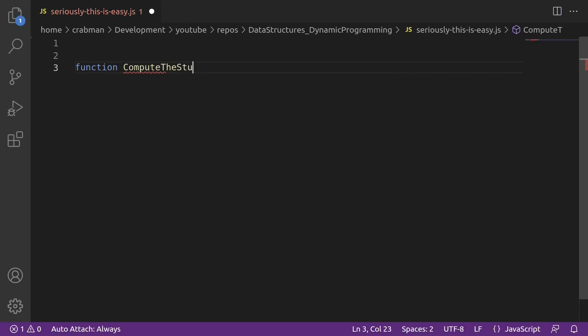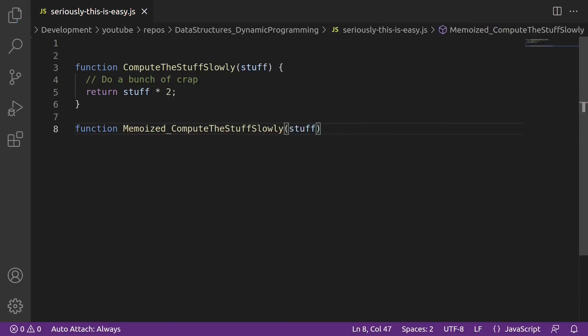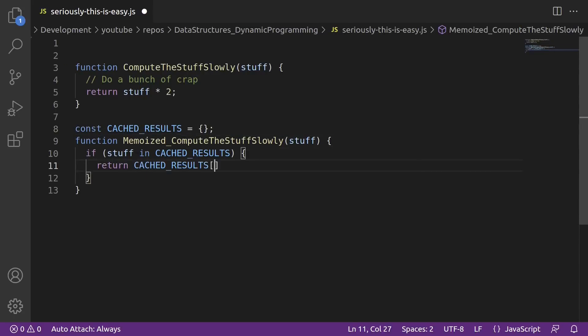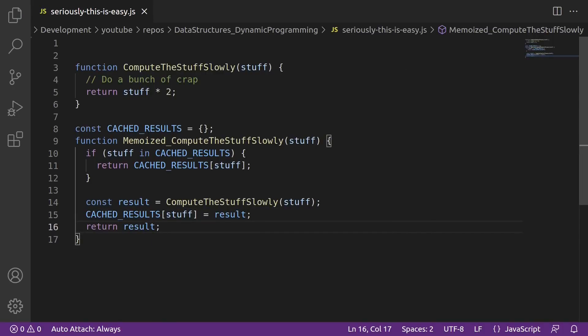We could have a function. Let's say that in code, I've got compute this stuff slowly, and that does some stuff. Memoization is just the act of saving the return value. So, we could have a memoized version that looks kind of like this. Memoized, compute this stuff slowly. And that's it. There's your memoized version. Different languages might have automatic ways of doing this, but that's basically it. So, don't overthink this.